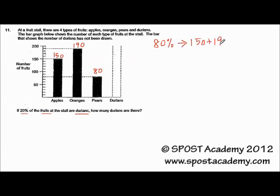So 80% is equivalent to 150 plus 190 plus 80. Because remember that the original of everything will always be 100%, so 100% minus 20% will give us 80% for the rest, which is 420. So to get 1%, I just need to use 420 divided by 80.